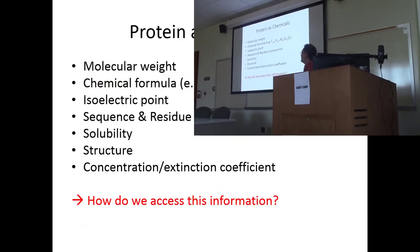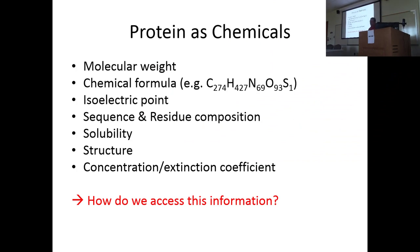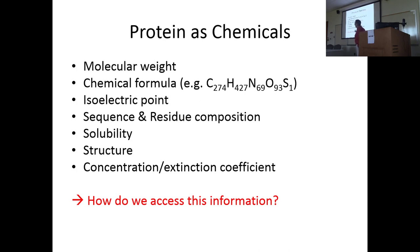I'm a biophysical chemist, but I'm a chemist nonetheless. Even though biologists and biochemists may think about proteins as blocks or spheres on a page or a step in a pathway, ultimately proteins are chemicals. All of the properties that chemicals have also apply to proteins, including things like molecular weight, a chemical formula, and isoelectric point. The isoelectric point is the pH at which the protein has a net neutral charge.